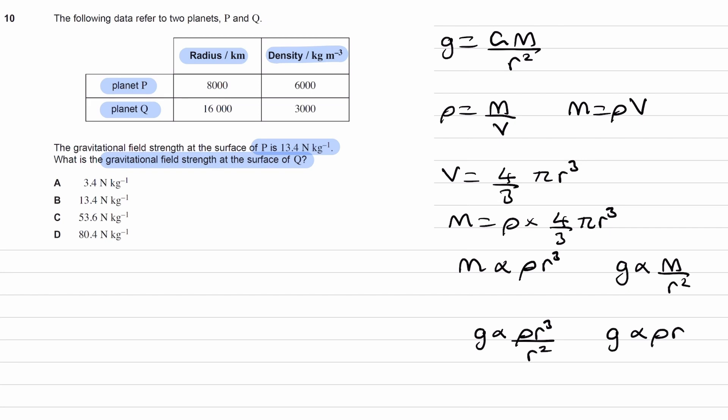Now we can look at the table. What's the factor by which radius is changing? What's the factor by which density is changing when we go from planet P to planet Q? We can see the radius doubles. The density halves.